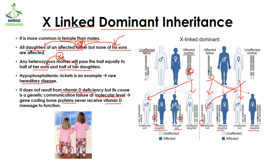This is an example of X-linked dominant inheritance — if a father or mother has an affected X chromosome, it will be transferred to their daughter and the trait will be expressed. If you have any questions related to this topic, you can ask in the comment section. I will see you in the next video.